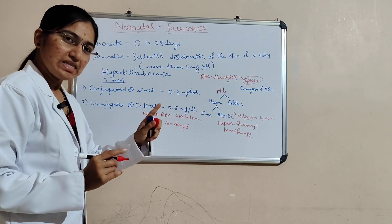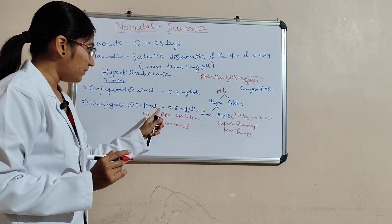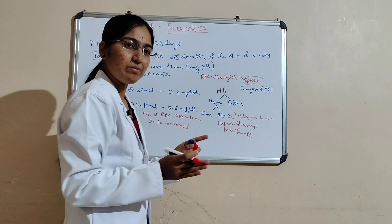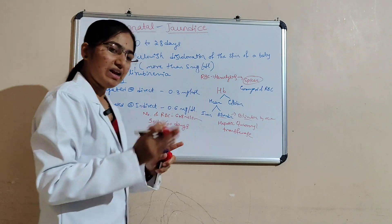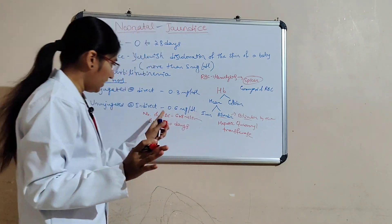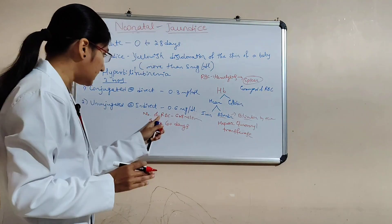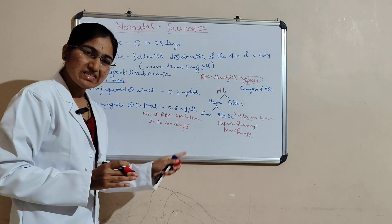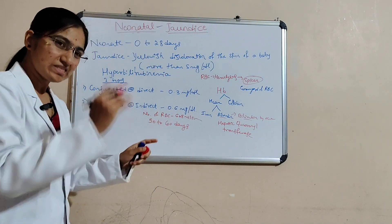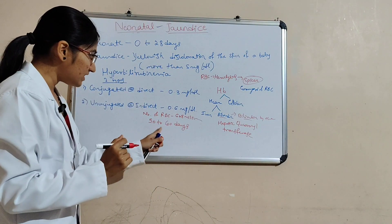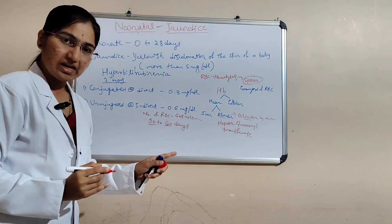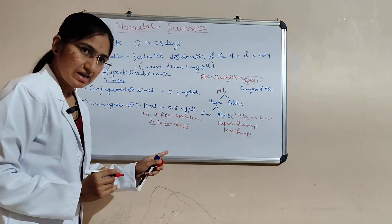So in adults, the number of RBCs is less and the lifespan is more — 120 days. But in a neonate, the number of RBCs is 6 to 8 million, which is more, but the lifespan is very less — only 50 to 60 days.